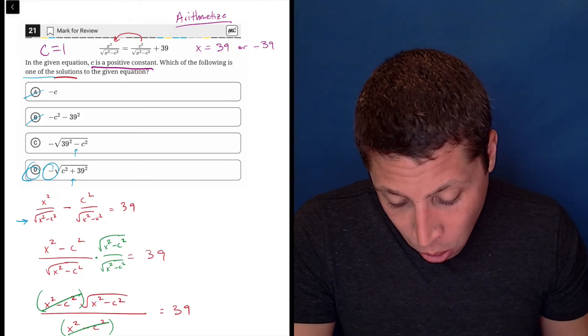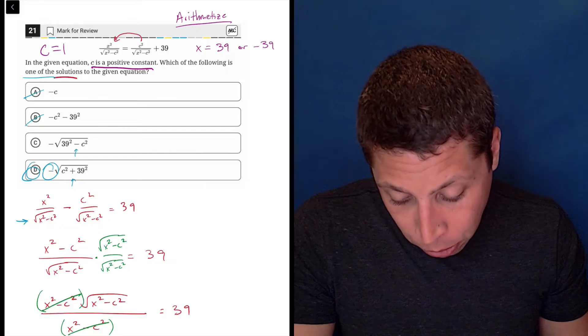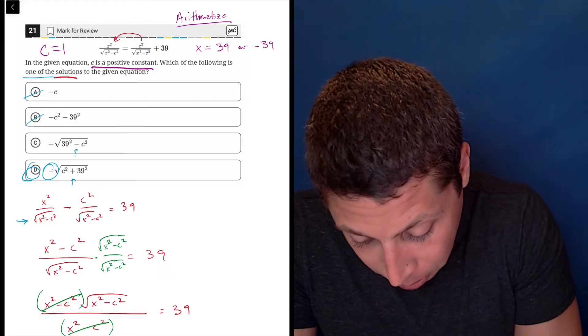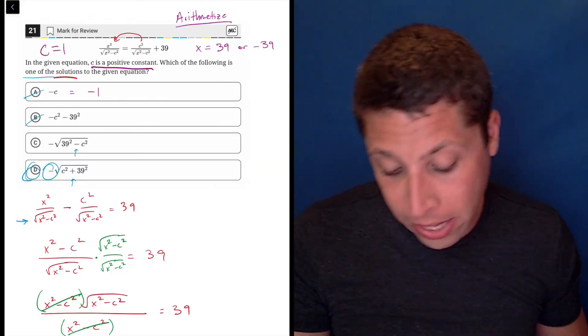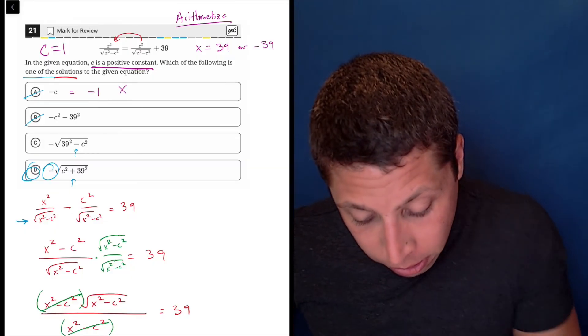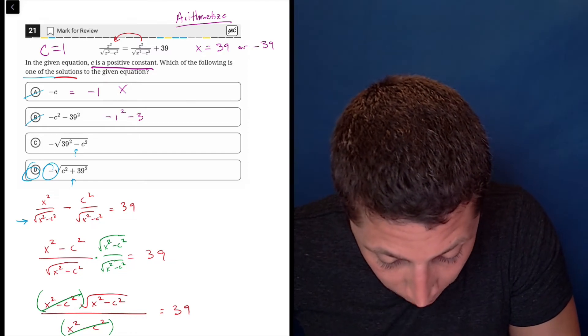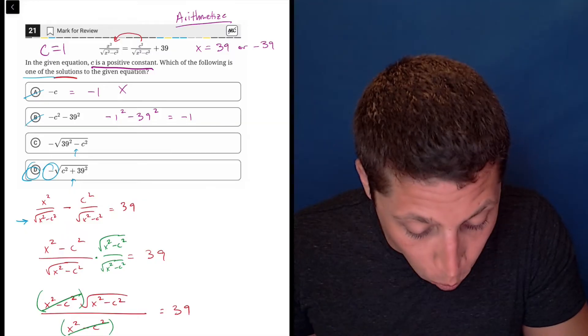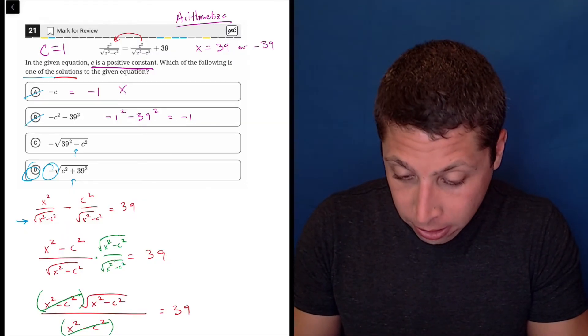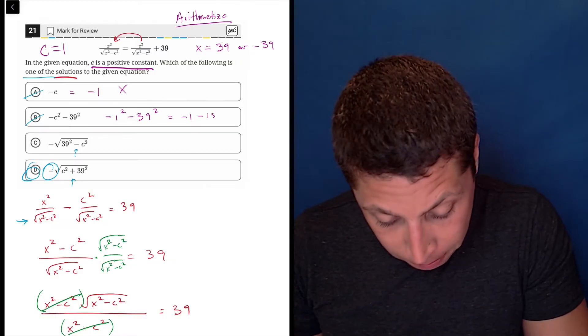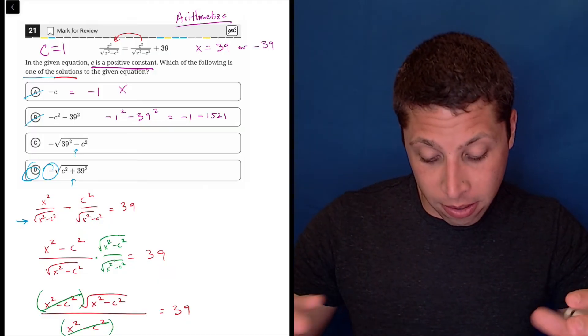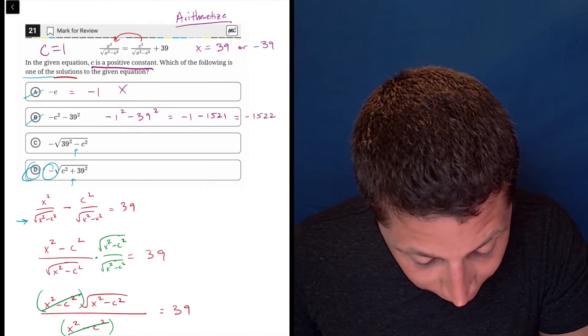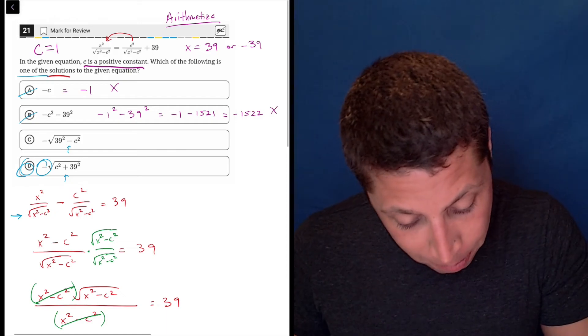So what do I do with that? Because that's not an answer. Well, what I would do here is I would try to plug in 1 for c and see if any of those gives me that. I think it's going to be a decimal. I think it's not quite 39. So if I plugged in 1 for c here, that would just be negative 1. That's definitely not 39 or negative 39. So that's wrong. This would be negative 1 squared minus 39 squared. So we can do that in the calculator. That negative 1 squared is just going to be negative 1. And then 39 squared. So this is going to be a crazy negative number, right? This is negative 1522. So that's also not positive or negative 39. So that's no good.